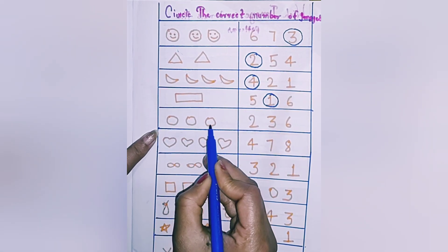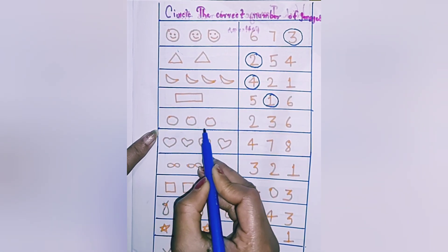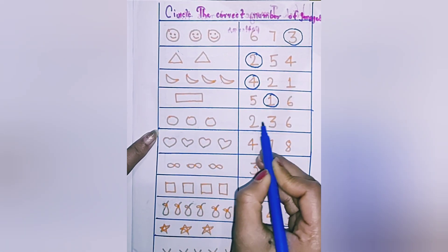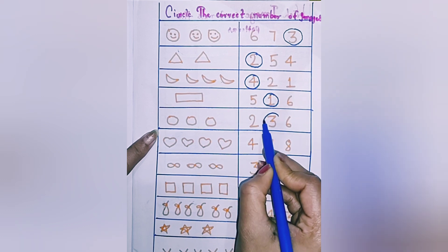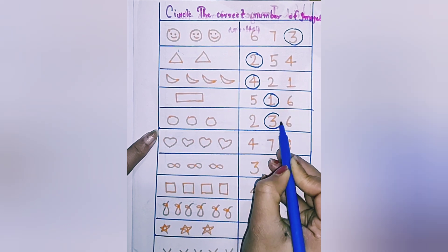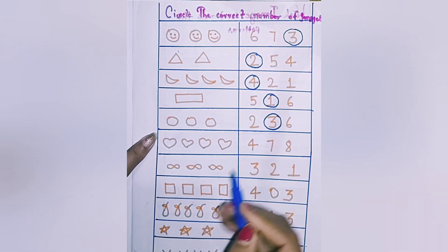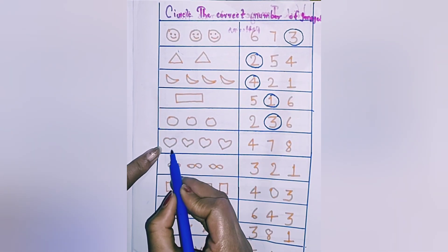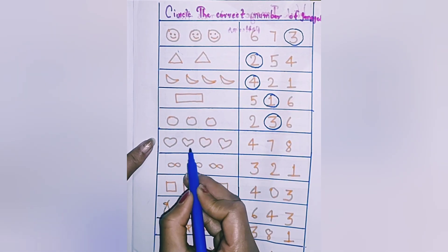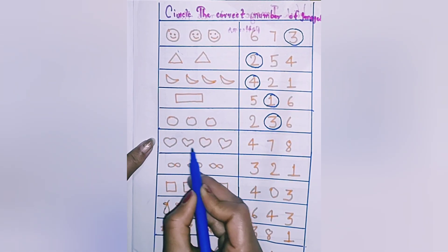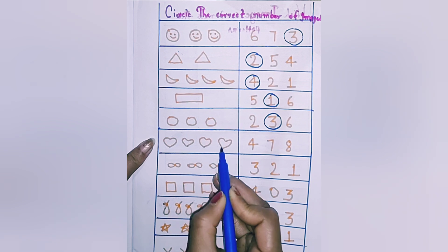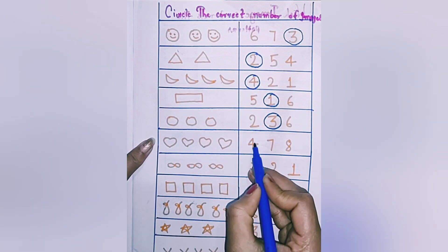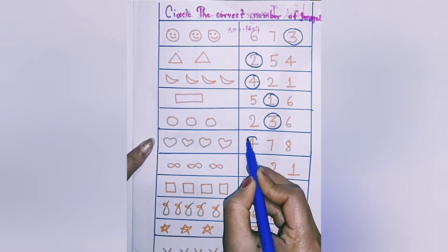One, two, and three. How many circles are there? How many hearts are there? One, two, three, and four — there are four.